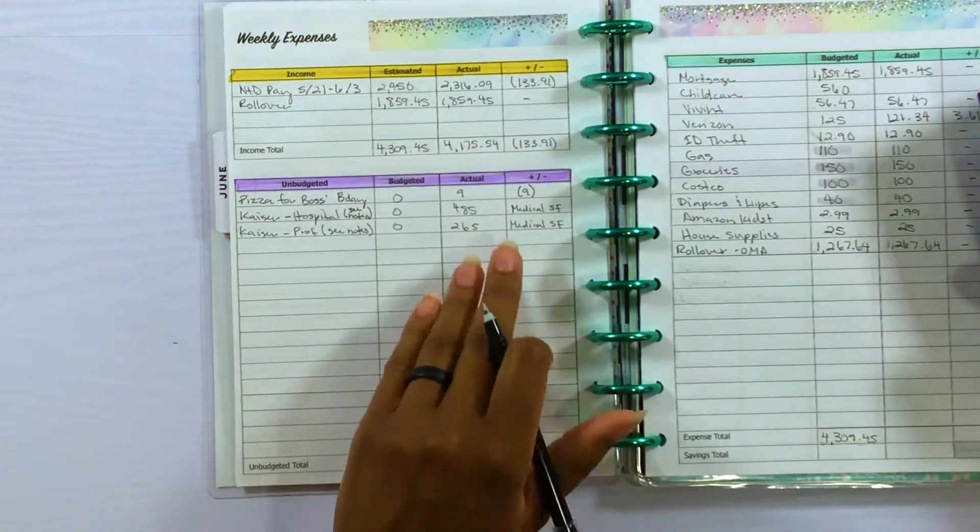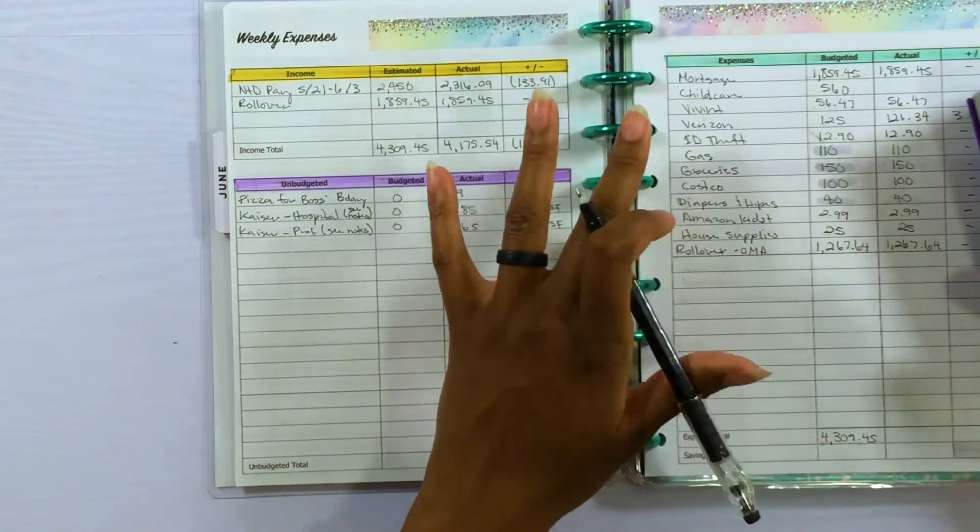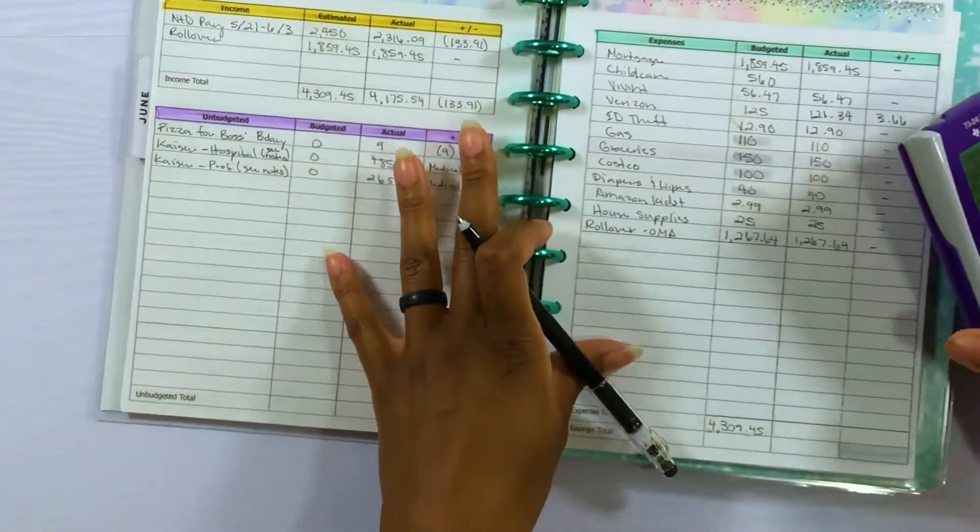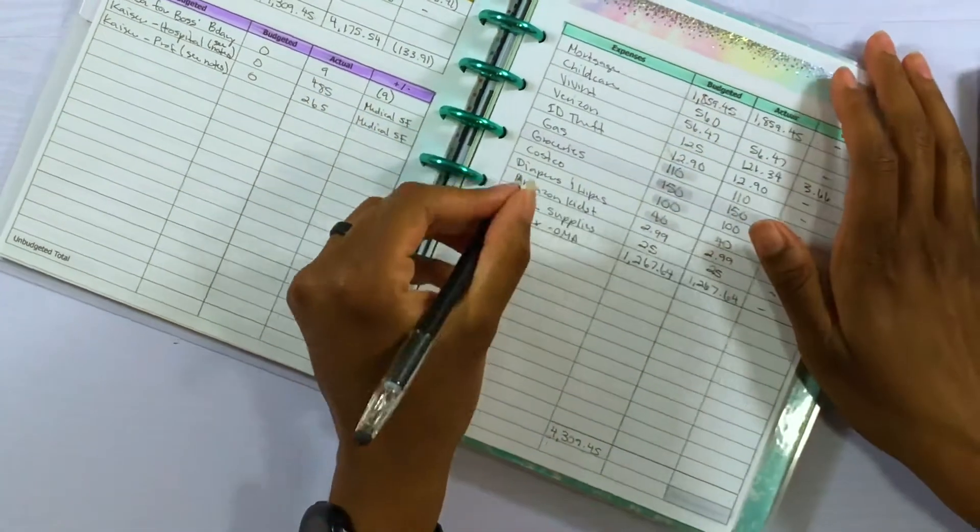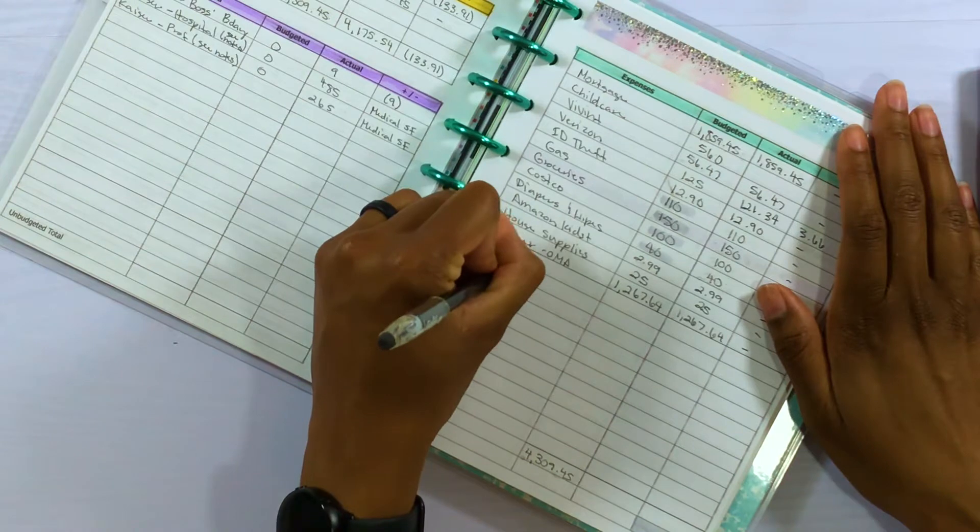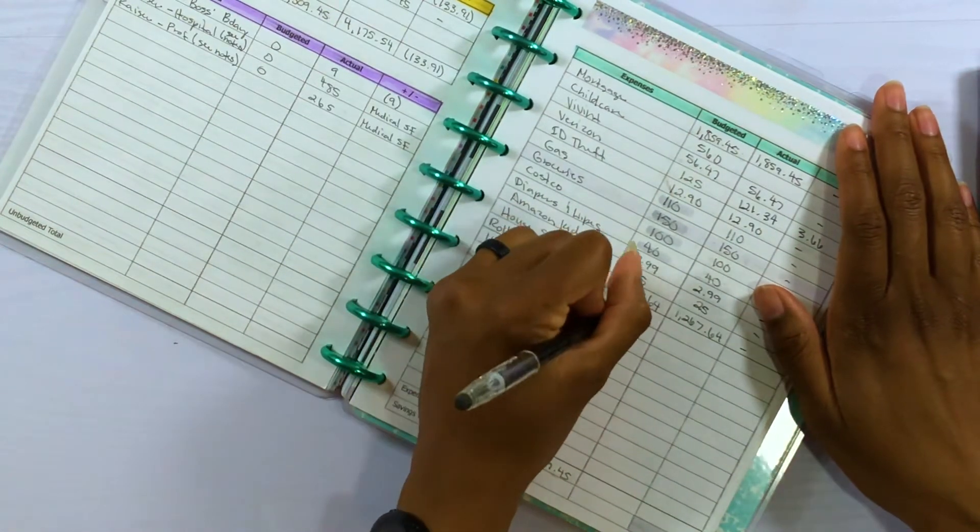But I wanted to note it right here just to keep an accurate record of what happened during this paycheck. So let me go ahead and write the unbudgeted of the $9 because the $9 did actually come out of this budget.